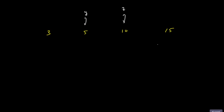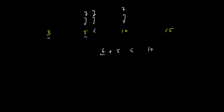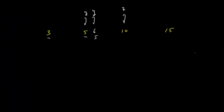Initially, Z is 10 and Y is 5. The minimum possible value of X required is 6. But X can only range between 3 and 5, so this is not possible. So we move the Y pointer one ahead to 6. Now the minimum possible value of X needed — so that X plus 6 is greater than 10 — is 5. We can take 5, so the triplet formed is 5, 6, 10. That is one valid triplet.